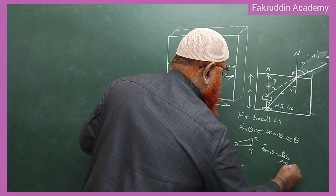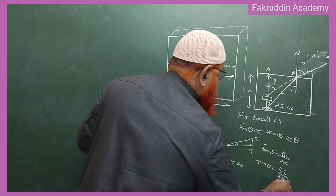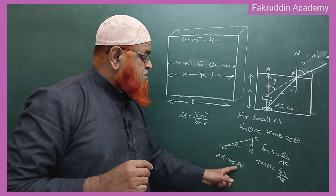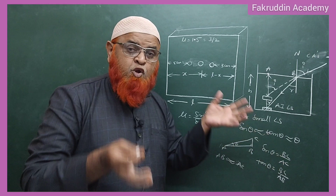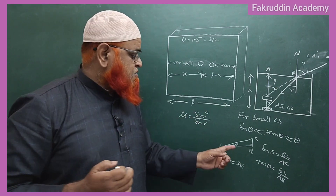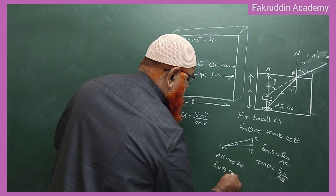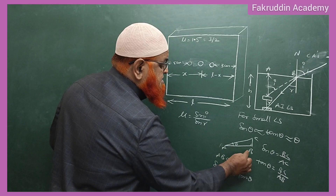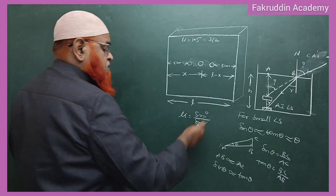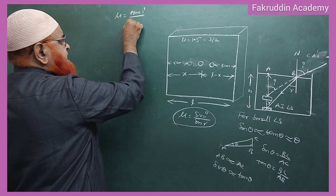Sine theta equals opposite side by hypotenuse, and tan theta equals opposite side by adjacent side, which is AB. Since AB is equal to AC, the denominators are the same, and the numerators are already the same. Therefore sine theta and tan theta are approximately equal for small angles, because the adjacent side and hypotenuse are almost the same. So instead of sine i by sine r, you can write mu equals tan i by tan r.